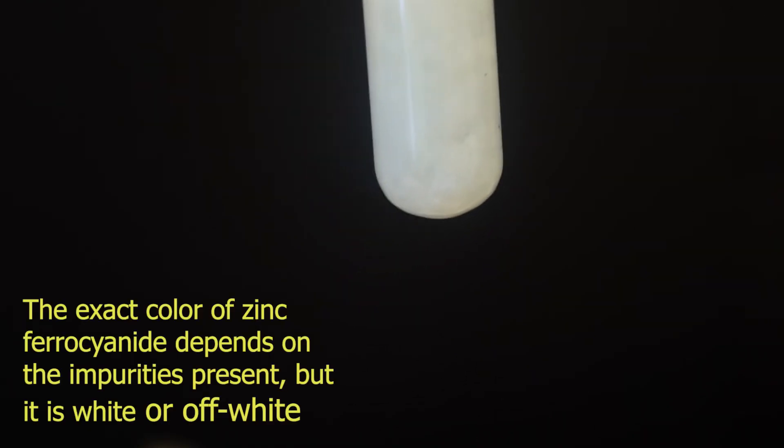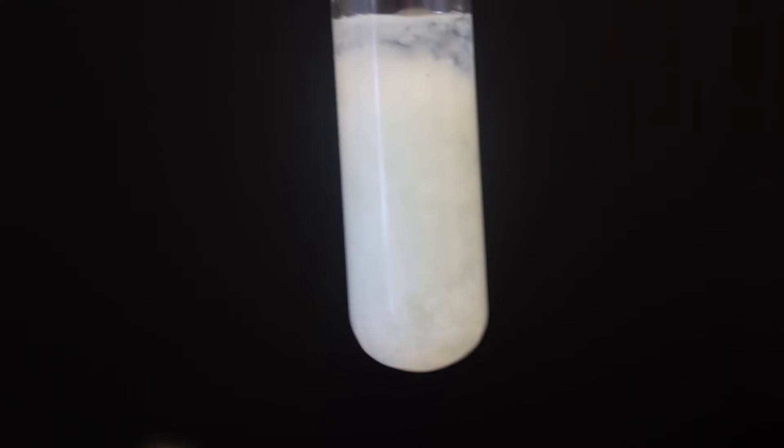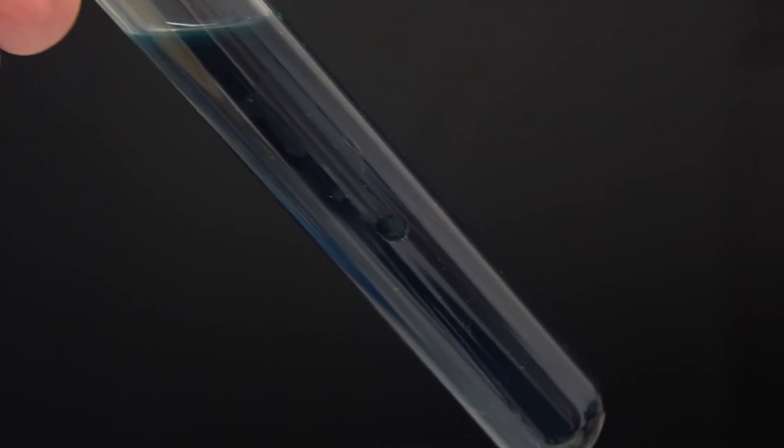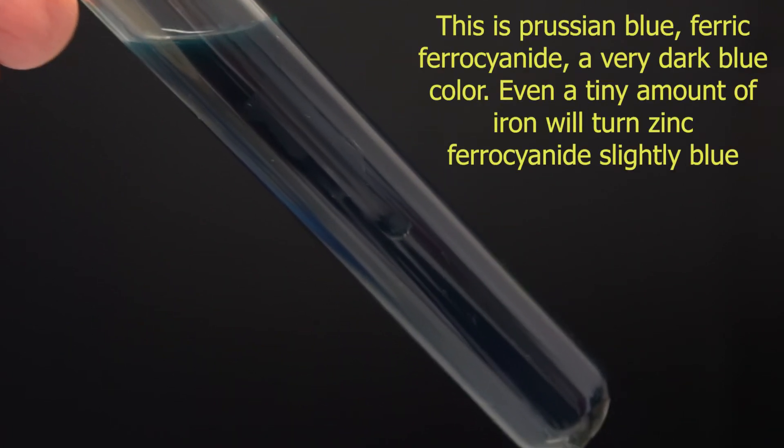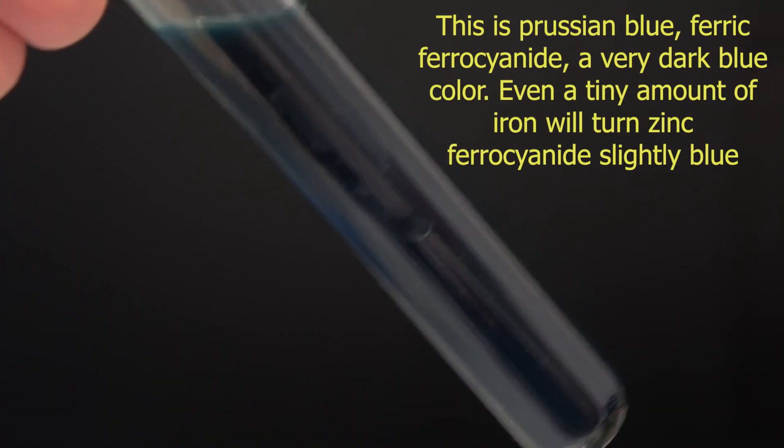Reacting potassium ferrocyanide with magnesium sulfate gave no immediate reaction, and reacting it with ferric chloride gave an intensely blue-colored compound called Prussian blue, which we'll cover in a later video. We performed these reactions just as additional references.